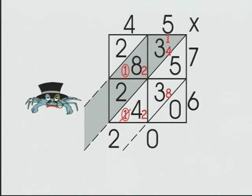2 plus 2, 4. Record. Move our 1000s to the 1000s column. 1 plus 2 is 3. Record.